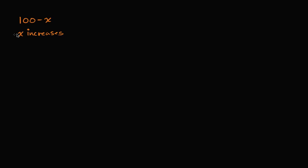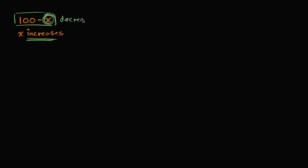Well, there are a couple of ways you could think about it. I have 100 and I'm subtracting x. So as x increases, I'm going to be subtracting larger and larger values. If I'm subtracting larger and larger values, I'm going to get smaller and smaller values. So this whole thing is going to decrease.